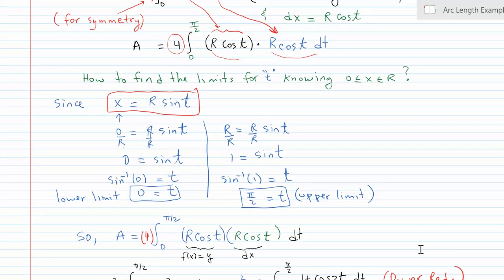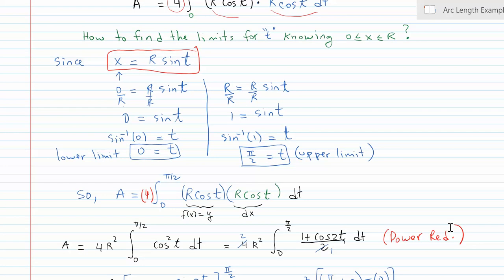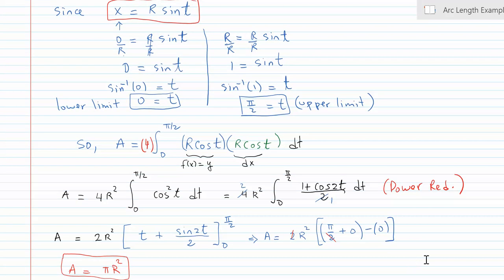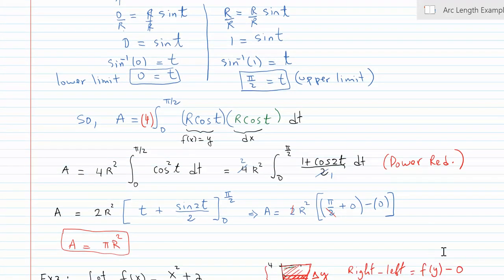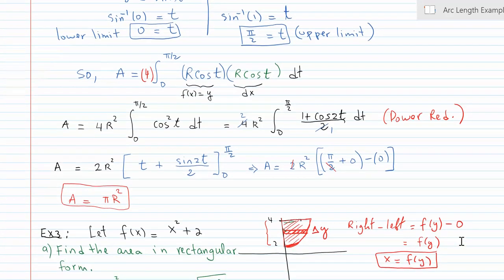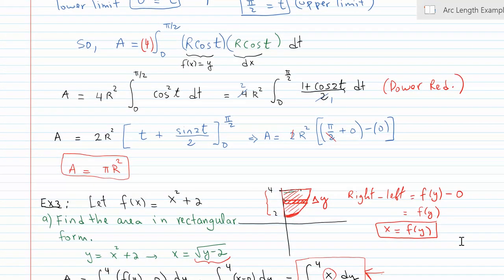Once I substitute everything into the area function and integrate, I'll show that the answer is πr². r times r is r² — that's a constant so I can take it outside. I'm left with cosine squared t, and there's a power-reducing formula for that. Once you follow through the rest of the work, it should clearly come out to be πr². This is a good place to pause and work through it yourself.